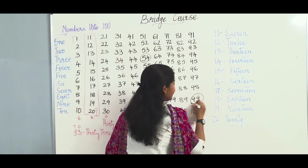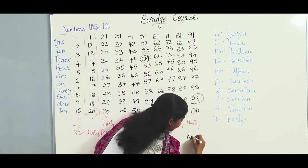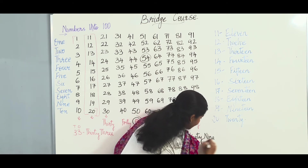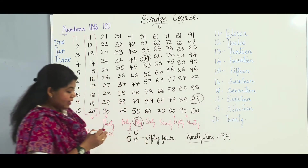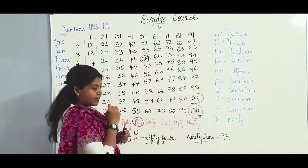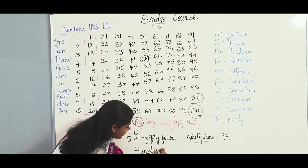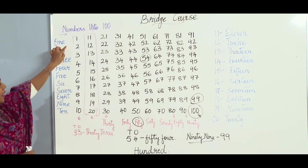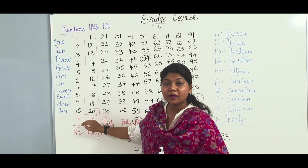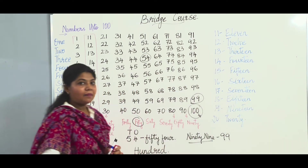In the same way you can go up to number 99. The spelling of 90 is N-I-N-E-T-Y and the spelling of 9 is N-I-N-E, so it becomes 99. Now let us learn the spelling of the 3-digit number 100. The spelling of 100 is H-U-N-D-R-E-D. Numbers from 1 to 20 have their individual names, and if we learn the tens from 20 to 90, it will be easy to write any number's name.